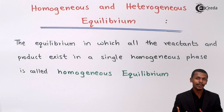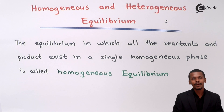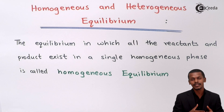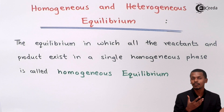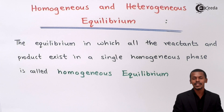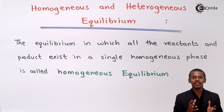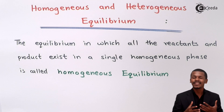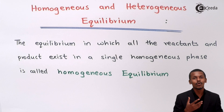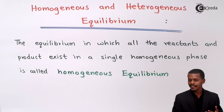Similarly, this applies to homogeneous equilibrium. When equilibrium is attained, the rate of the forward reaction and the rate of the reverse reaction are equal. There will be a certain stage where the mixture is in equilibrium, and that mixture should be in a homogeneous phase — that is why we call it homogeneous equilibrium.